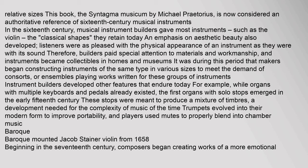In the 16th century, musical instrument builders gave most instruments, such as the violin, the classical shapes they retain today. An emphasis on aesthetic beauty also developed; listeners were as pleased with the physical appearance of an instrument as they were with its sound. Therefore, builders paid special attention to materials and workmanship, and instruments became collectibles in homes and museums. It was during this period that makers began constructing instruments of the same type in various sizes to meet the demand of consorts, or ensembles. The first organs with solo stops emerged in the early 15th century, meant to produce a mixture of timbres. Trumpets evolved into their modern form to improve portability.